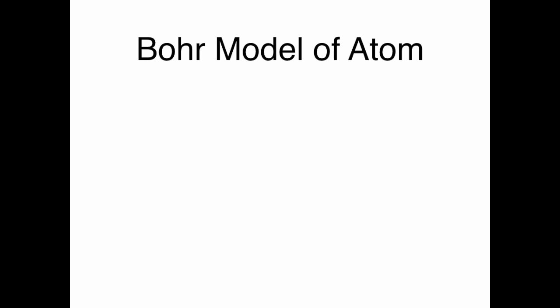Our discussion starts with the Bohr model of the atom. In the nucleus of the atom, there are a set of protons depicted by these red disks here. Changing the number of protons changes the element — one proton is a hydrogen atom, two protons is a helium atom, etc. Also in the nucleus are neutrons, depicted by these blue circles here. Changing the number of neutrons changes the isotope.